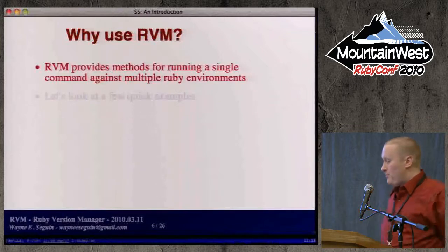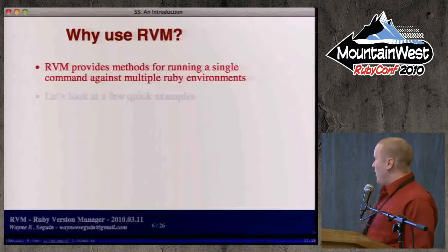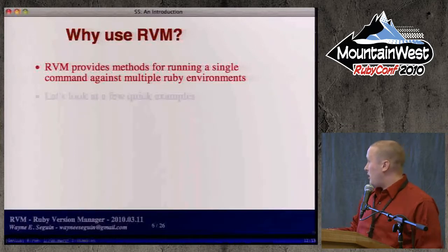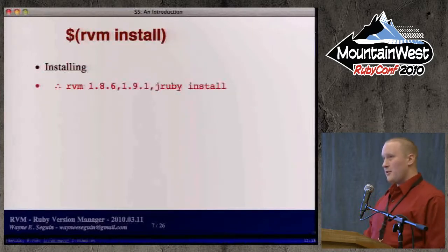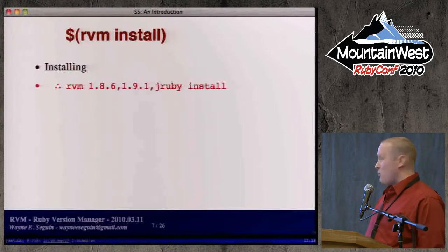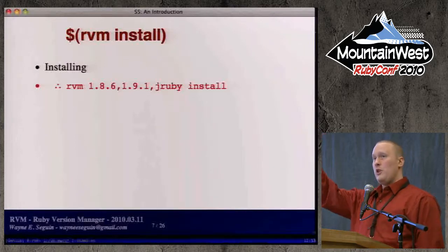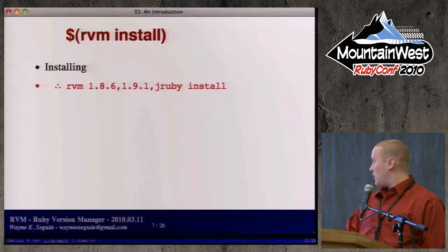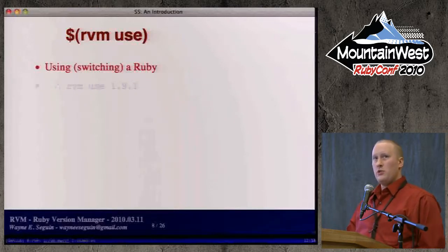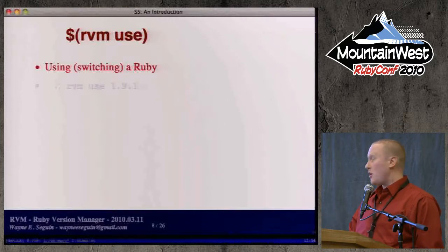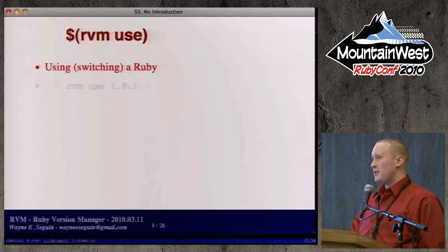Once installed properly, RVM provides methods for running a single command against multiple Ruby environments at the same time. For example, installing: if you want to install 1.8.6, 1.9.1, and JRuby all in one go, you just do 'rvm 186 191 jruby install' and it will go through in that order and install those three interpreters. RVM is self-contained — by default, if installed as a user (not root), it's located in the .rvm directory in your home. It's safe to just blow it away and start fresh anytime.